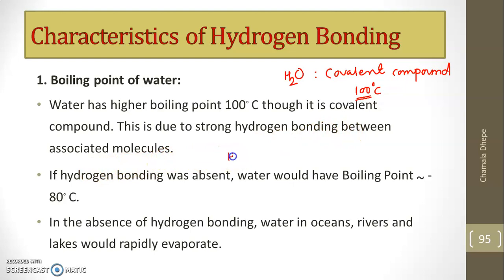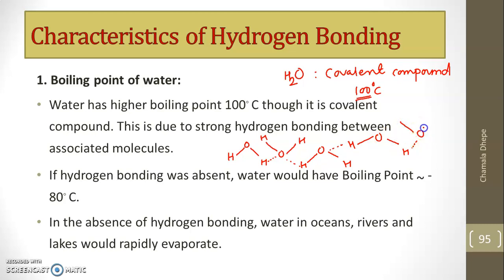Water has a high boiling point of 100°C, though it is a covalent compound. This is due to the strong hydrogen bonding between associated molecules. One water molecule bonds with another, and another, forming a continuous association — represented by dotted lines. Due to this association of different water molecules, water has a high boiling point. If hydrogen bonding were absent, water's boiling point would be nearly minus 20 to minus 80 degrees Celsius.